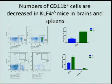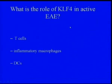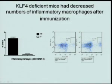In contrast, the number of CD11B-positive cells was significantly decreased in the KLF4 knockout mice in both the brains and the spleens, which was consistent with the notion of KLF4 being important for inflammatory monocytes. So we asked: what is the role of KLF4 in the induction of active EAE in T cells, inflammatory monocytes, and dendritic cells?